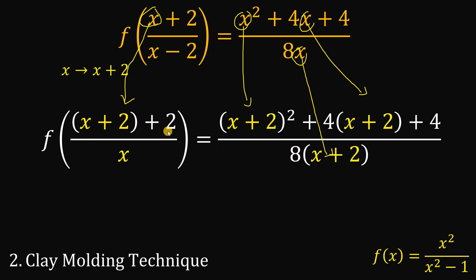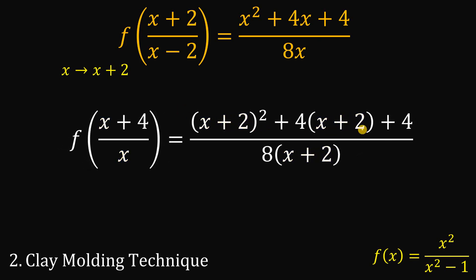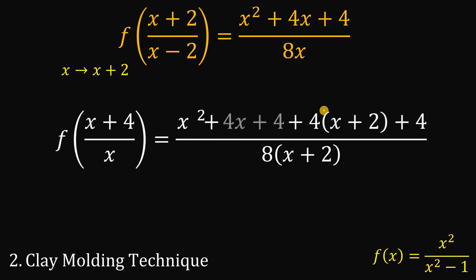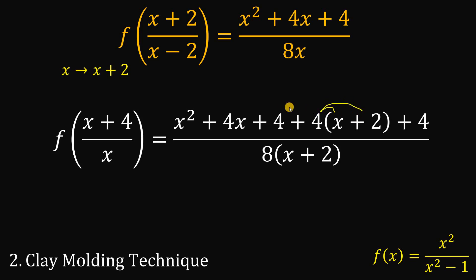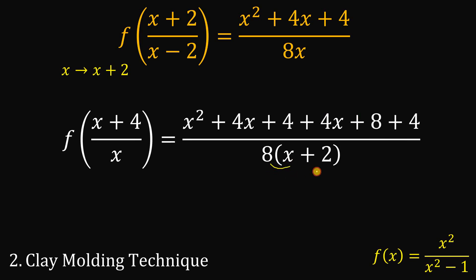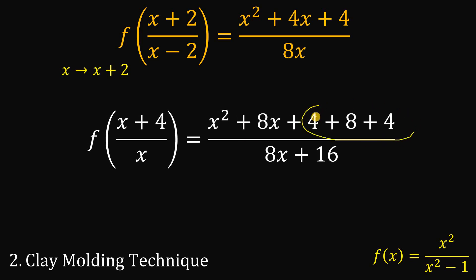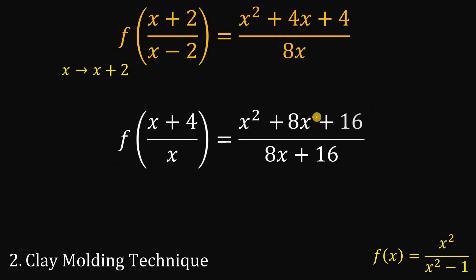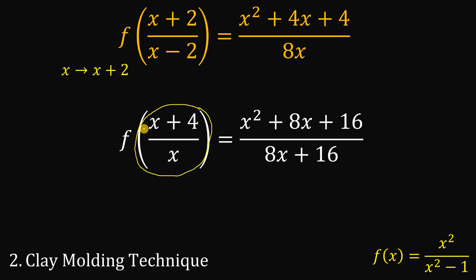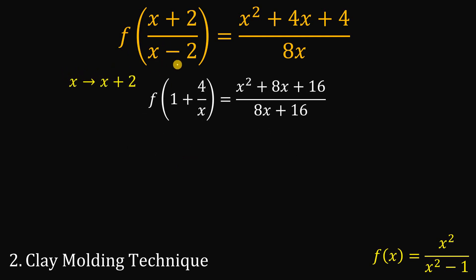After the first molding, the numerator of the argument becomes (x+2)+2 = x+4. On the right-hand side: (x+2)² = x²+4x+4; distributing 4 gives 4x+8; distributing 8 gives 8x+16. Combining like terms: 8x on the numerator and 16. Simplifying the argument x/x + 4/x gives 1 + 4/x. So after first molding, f of (x+2)/(x-2) becomes f of (1 + 4/x).